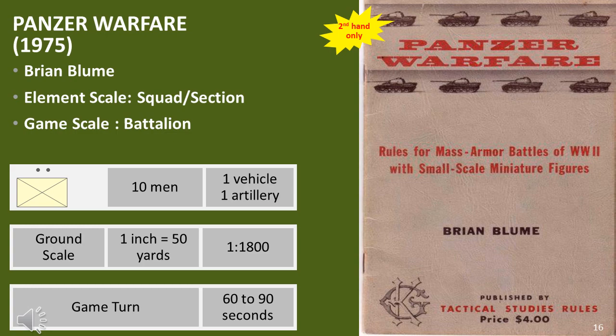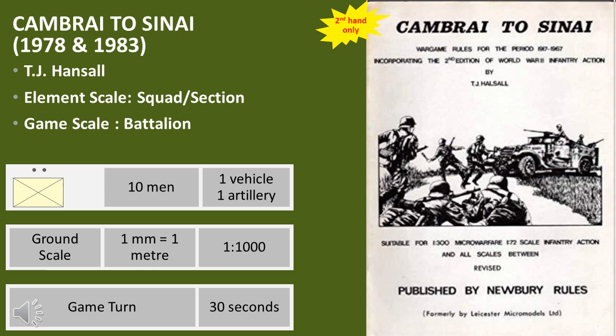Cambrai to Sinai, another set of UK rules, moved the detail and complexity bar to new levels. The sheer detail proved popular, although playing a game was slow and rarely produced a result. This was a trend repeated in the UK and with some US rules. While attractive to experienced gamers, in practice these rules never proved popular from a game-playing point of view, and were only briefly considered an alternative to WRG rules.